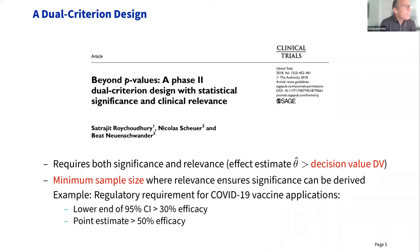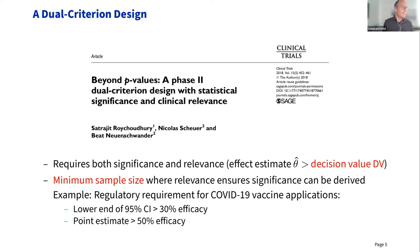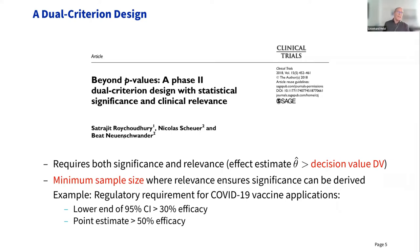Recently, a paper published in Clinical Trials in 2018 suggested combining statistical significance and clinical relevance — to look at both in a phase two clinical trial. This dual criterion requires both significance and relevance: the effect estimate theta must be larger than a specified decision value DV. You only flag success if your estimate is large enough and also significant. You can derive the smallest sample size where relevance ensures significance — a sample size calculation that no longer depends on power.